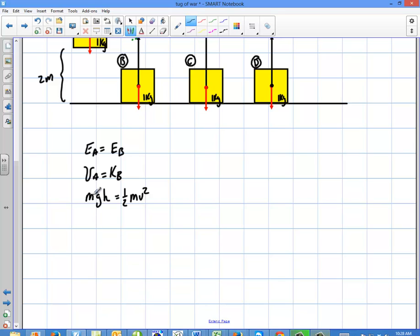And then that just becomes, the masses cancel here. So the speed right before impact is going to be V is the square root of, multiply the two over, 2gh.